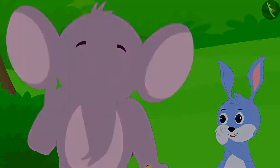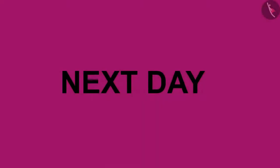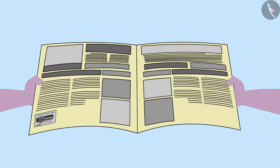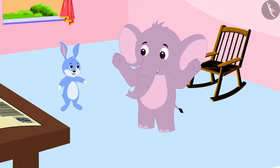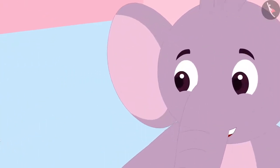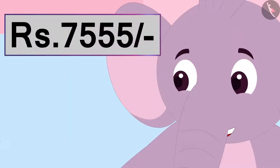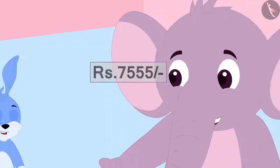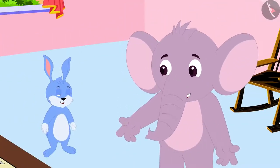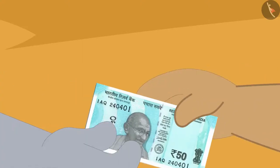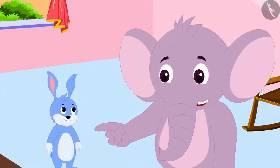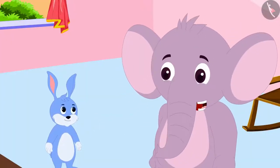The next day the winning lottery number was printed in the newspaper, and it was found that Appu won the lottery! Appu received 7555 rupees as the reward. Both friends decided that they would distribute the amount by giving 50 rupees to each of the poor villagers.